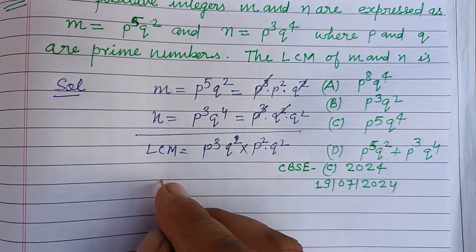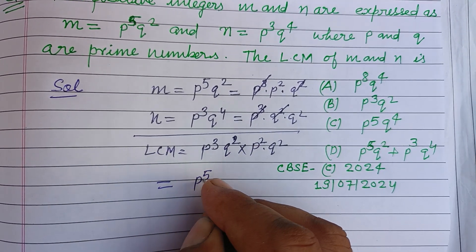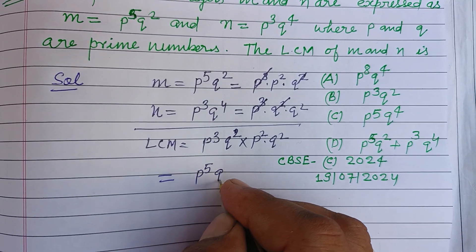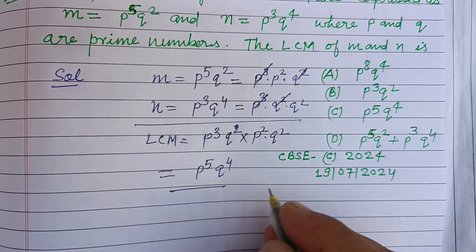So therefore the LCM is p q p square, this is p to the power 5, q square into q square q to the power 4. So p to the power 5 q to the power 4 is the LCM of the numbers, which is found in option C.